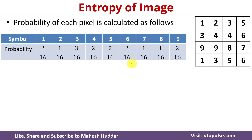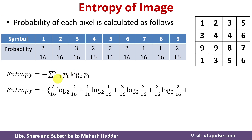Once we have the probability for each pixel value, we use the entropy equation to calculate the entropy. We put in the probabilities: for i=1, we have (2/16) × log₂(2/16); for i=2, we have (1/16) × log₂(1/16); for i=3, we have (3/16) × log₂(3/16), and so on for all 9 symbols.